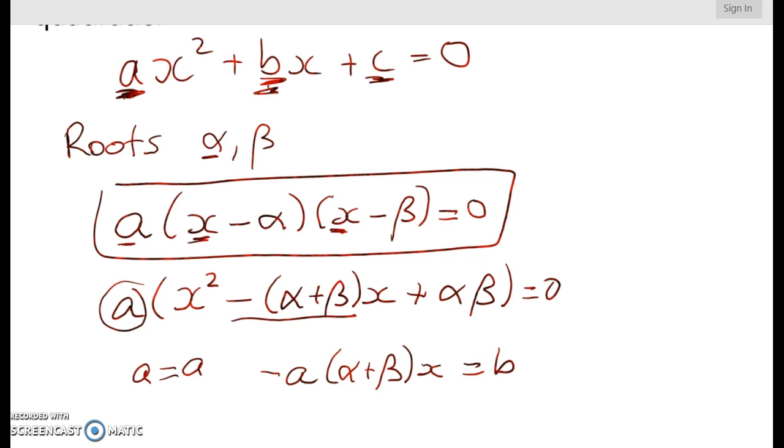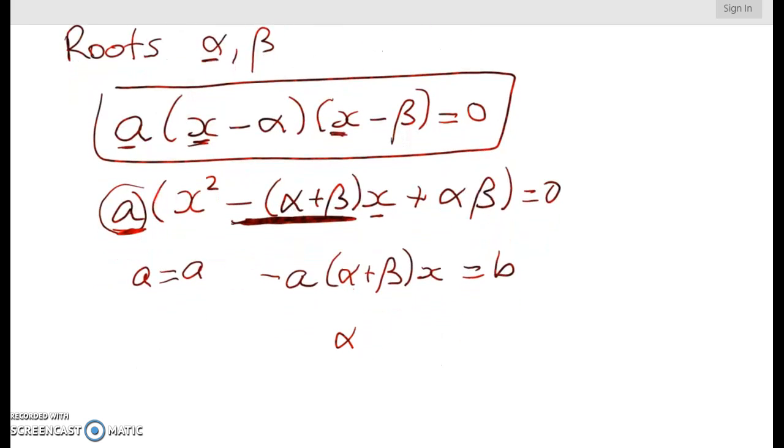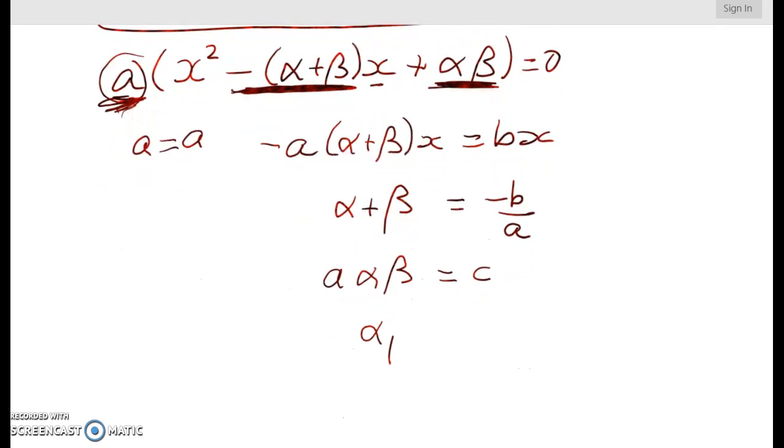Okay, because when I do the expansion, the coefficient from the factorised version, the coefficient on x is negative alpha plus beta in brackets times that a. And that gets me my first result that we know, which is that the sum of the roots alpha plus beta is equal to negative b over a. And when we do a similar thing with the constant coefficient, we get a alpha beta is equal to c, giving me the other rule that you would have memorised as alpha beta is equal to c over a.